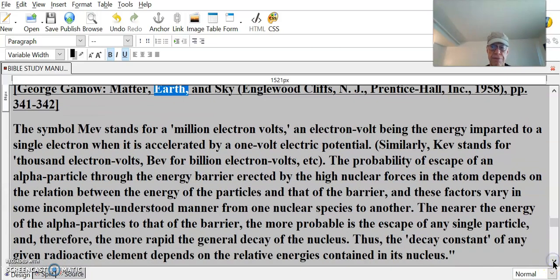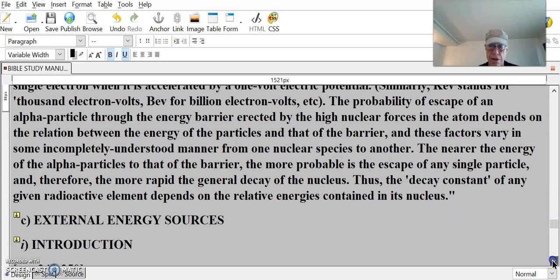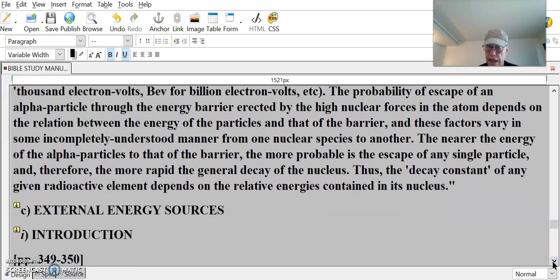The probability of escape of an alpha particle through the energy barrier erected by the high nuclear forces in the atom depends on the relation between the energy of the particles and that of the barrier, and these factors vary in some incompletely understood matter from one nuclear species to another. The nearer the energy of the alpha particles to that of the barrier, the more probable is the escape of any single particle, and therefore the more rapid the general decay of the nucleus. Thus, the decay constant of any given radioactive element depends on the relative energies contained in the nucleus.